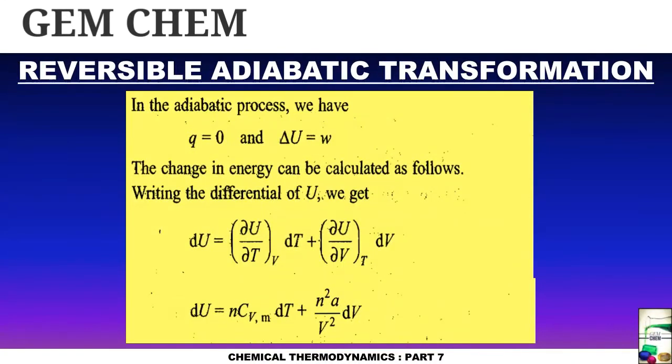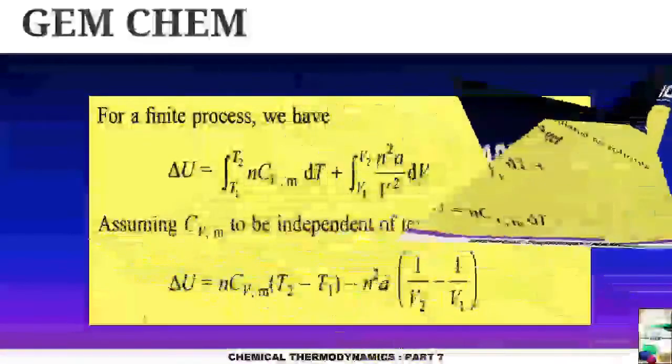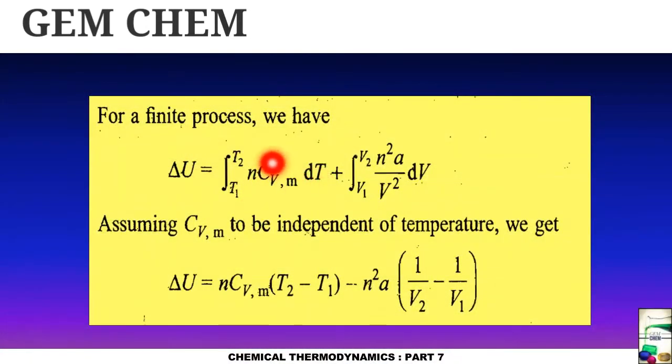Now see, here we are going to deal with reversible adiabatic transformation. We know for adiabatic transformation, q equals to zero and delta U equals to w. So we know the change in energy can be calculated by taking differential of U. So we get this expression and from here we know that this is nCvm and this part is n square a by V square, which we have seen previously. So ultimately for finite process we have such kind of integration, that is here T1 to T2 is the range and here V1 to V2 is the range. Assuming that Cvm is independent of temperature, we ultimately get the expression of delta U.